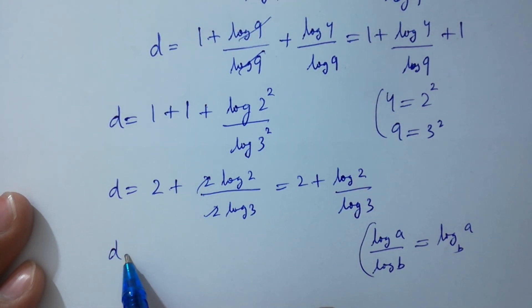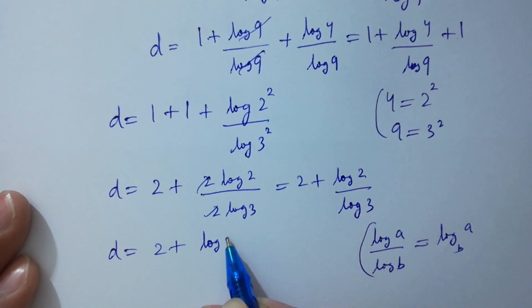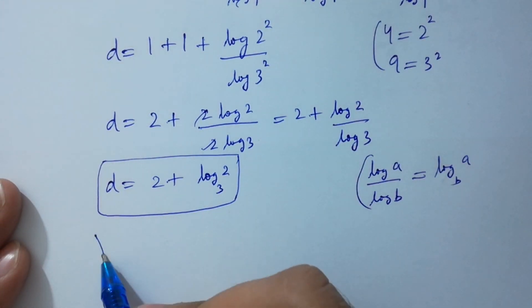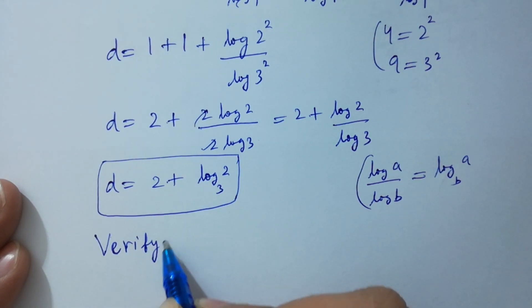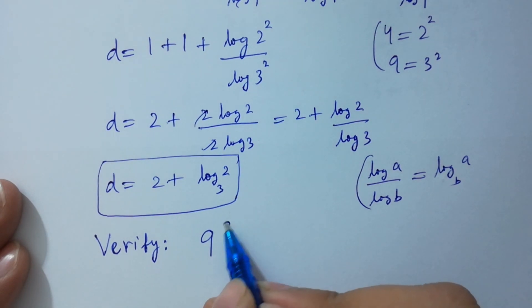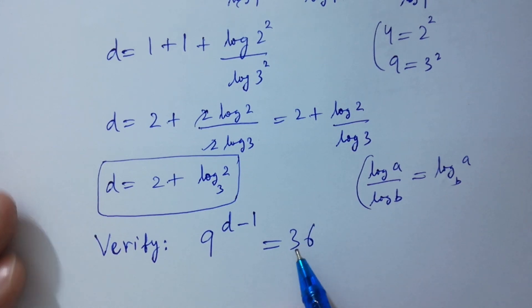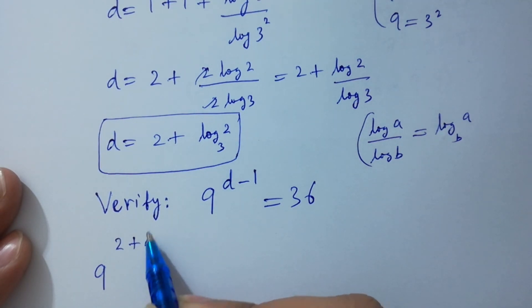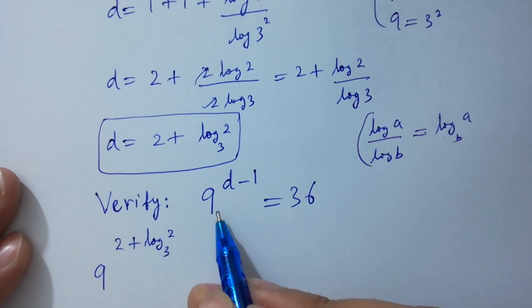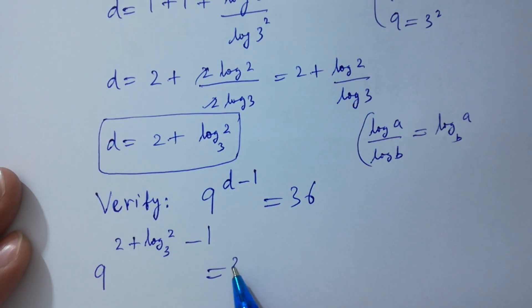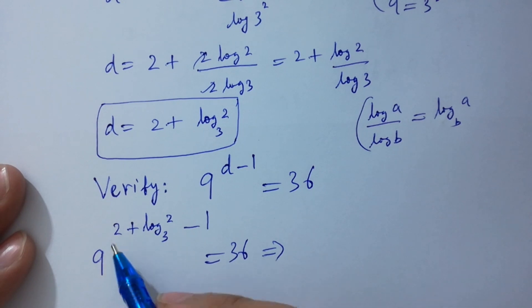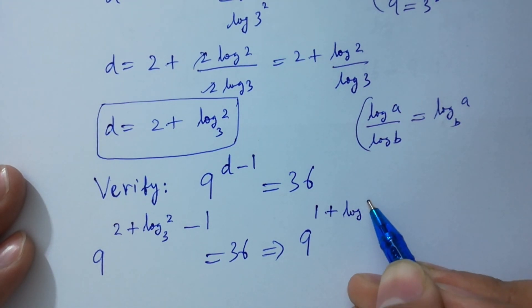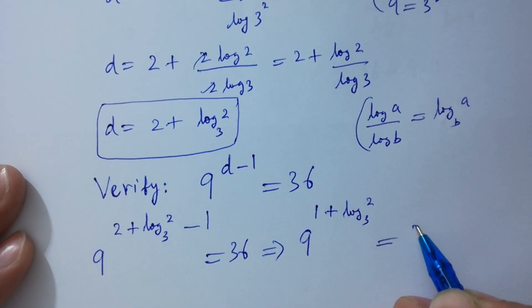So d equals 2 plus log 2 to the base 3, which is the value of d. Now let's verify: 9 to the power d minus 1 equals 36. Substituting d equals 2 plus log₃2, we get 9 to the power (2 plus log₃2 minus 1), which is 9 to the power (1 plus log₃2) equal to 36.